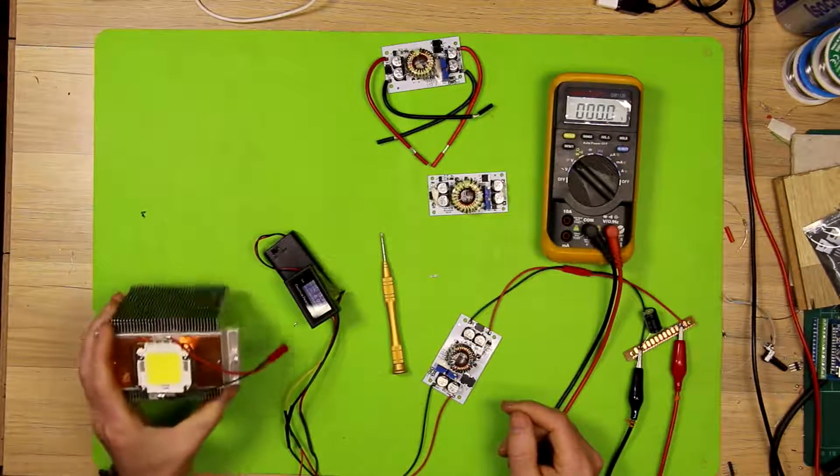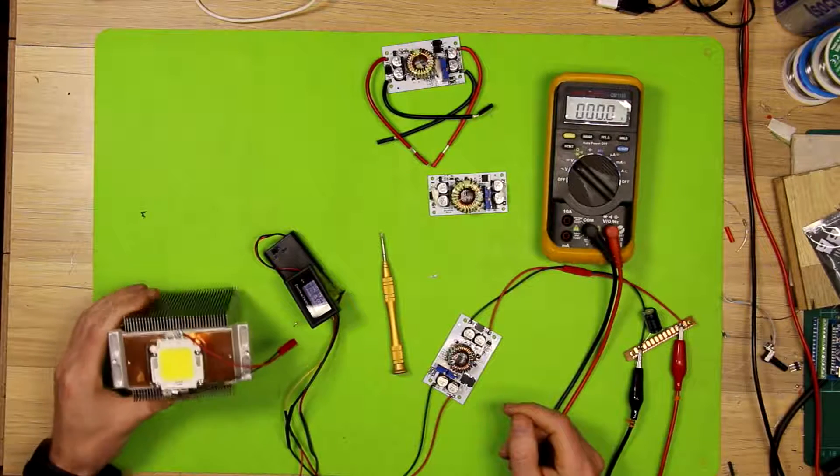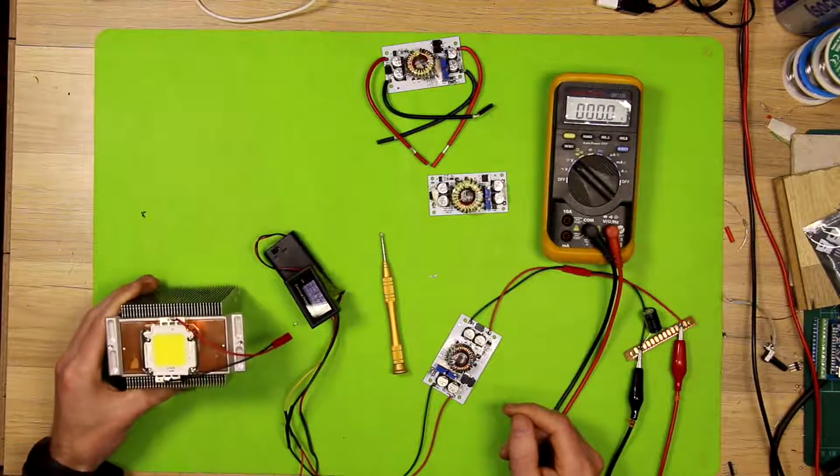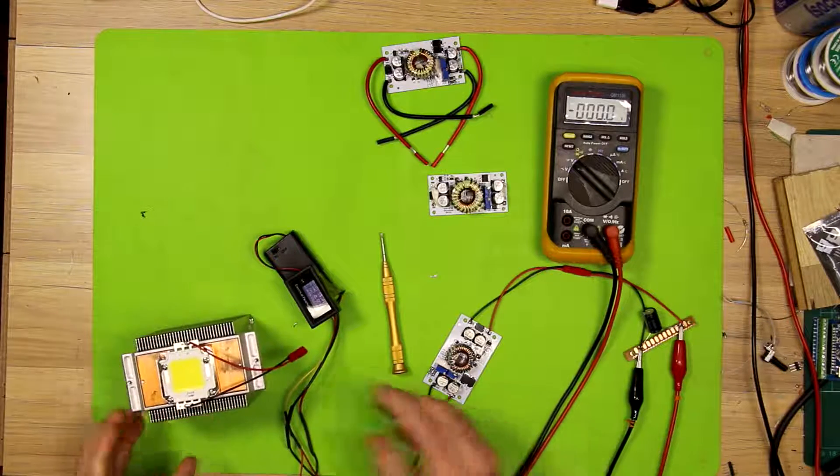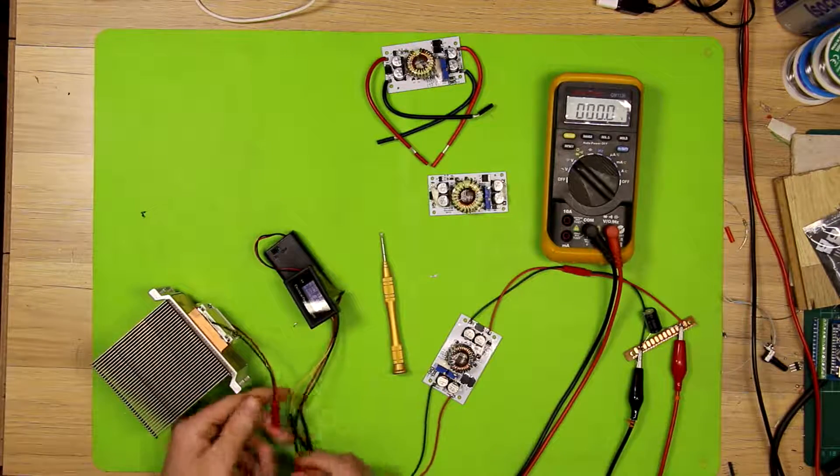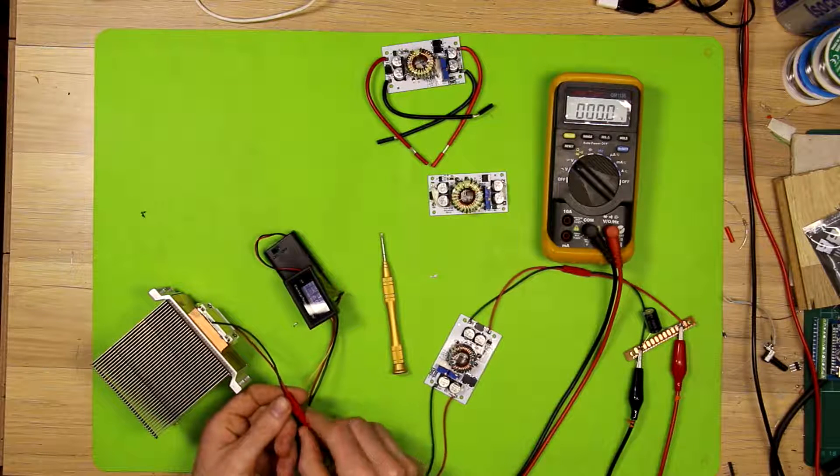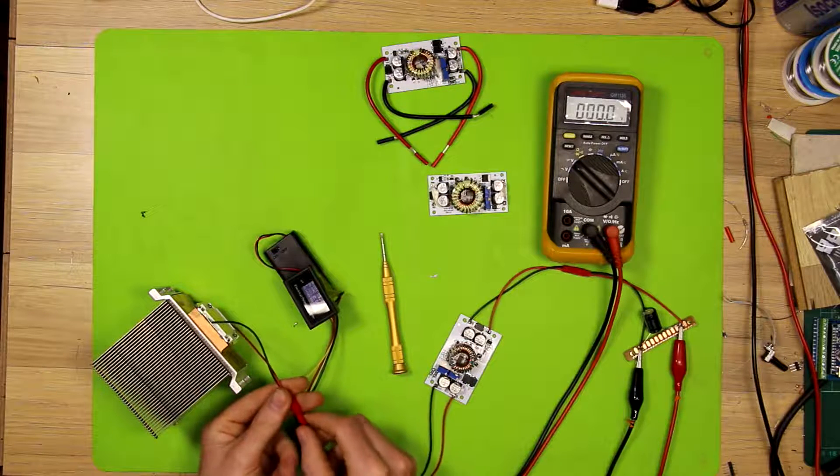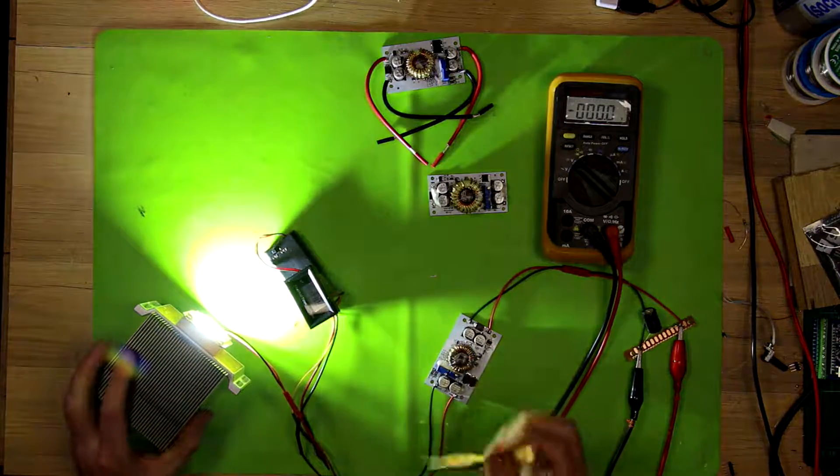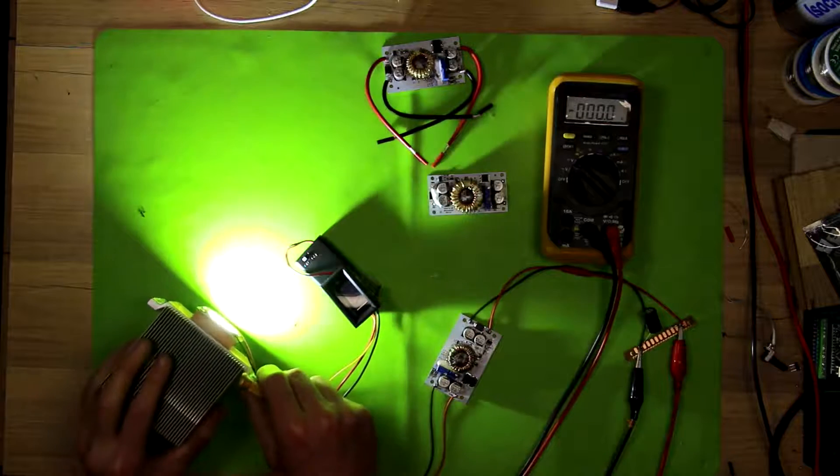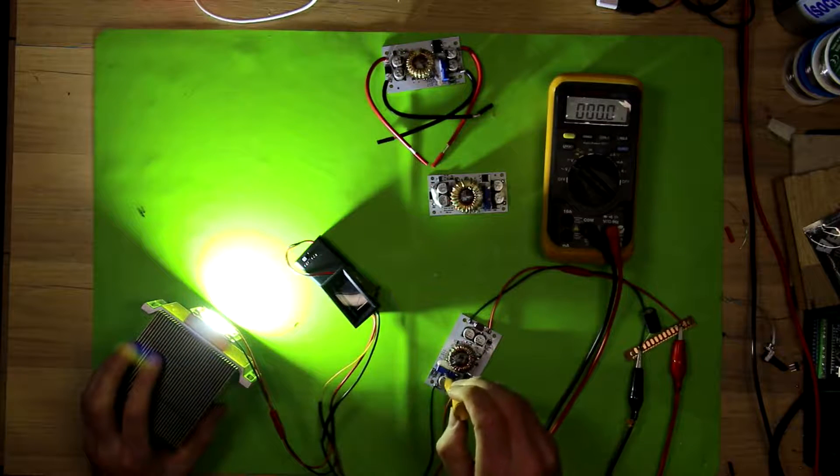So if I turn this counterclockwise to turn it up, we've got 15 watts, 20 watts, 25, and we're up at 4.5 amps on the bench supply. So I don't really want to go much higher than that, otherwise the power supply gets a bit unhappy.